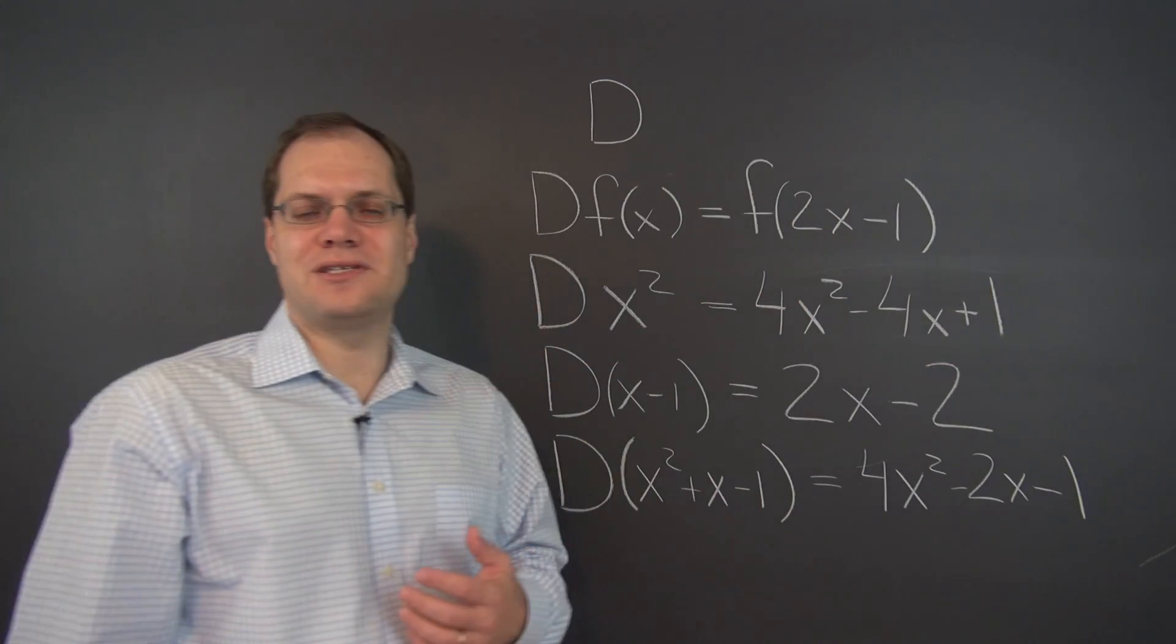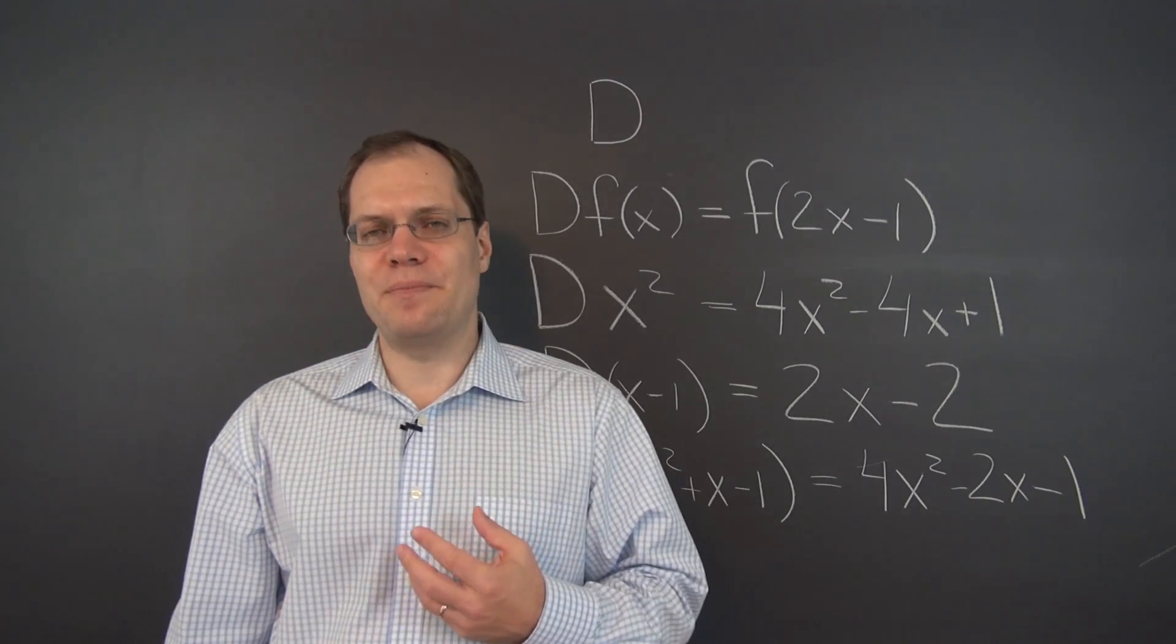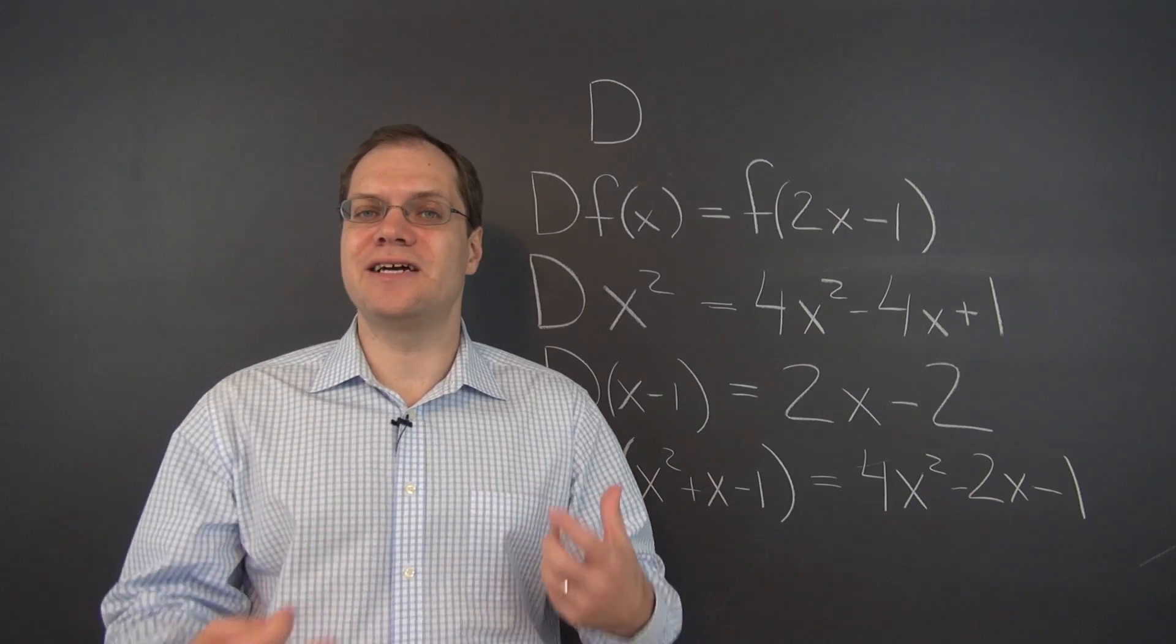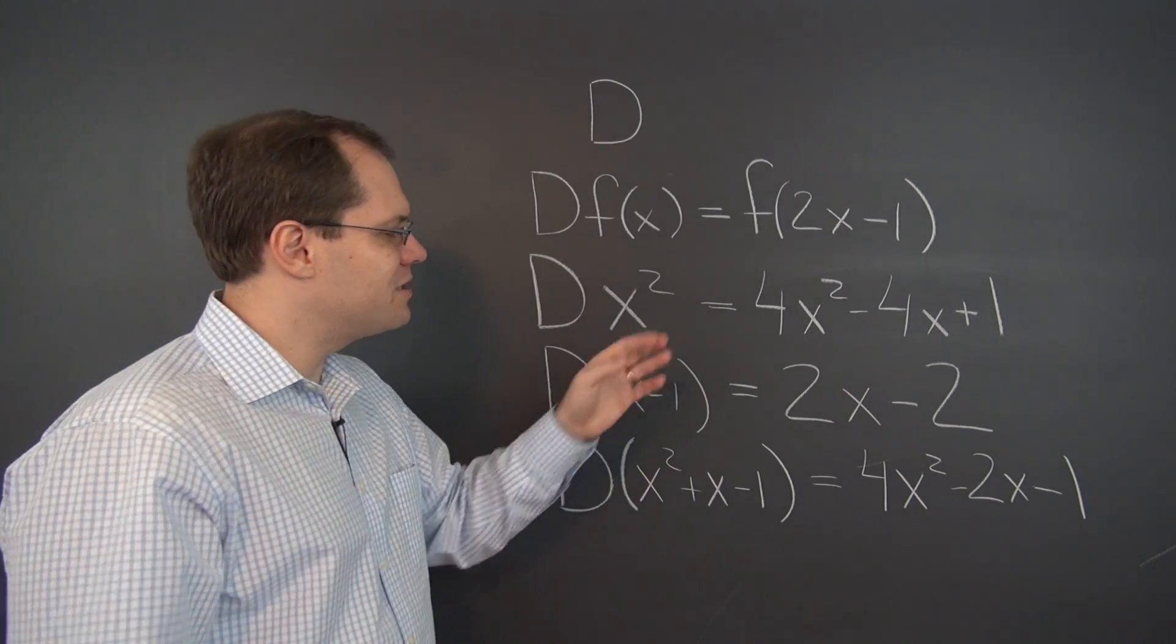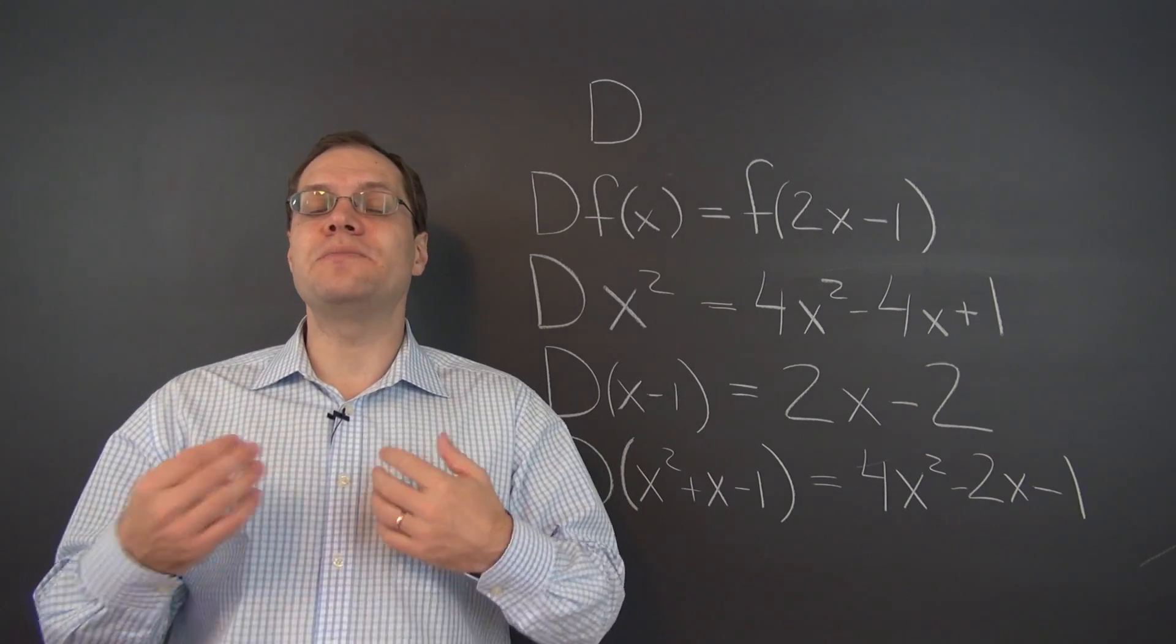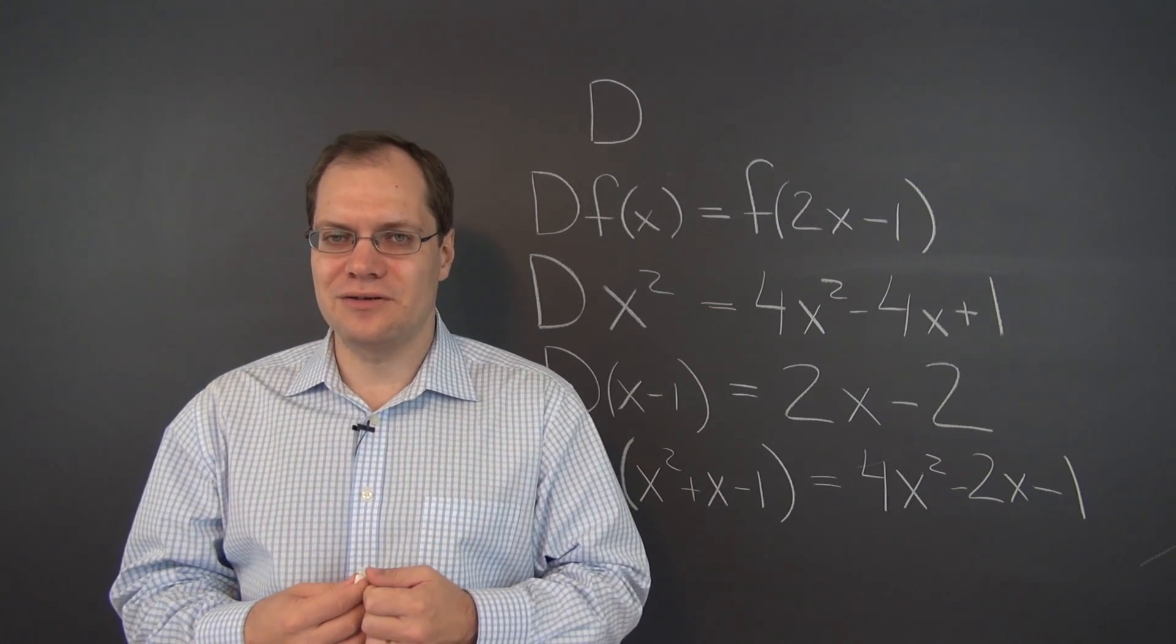And what we also see from this example is the linear property of this transformation. Because it's pretty much staring right at you. It's kind of an unusual thing. We've never encountered a transformation like this before. So it may take some time to wrap your mind around it.